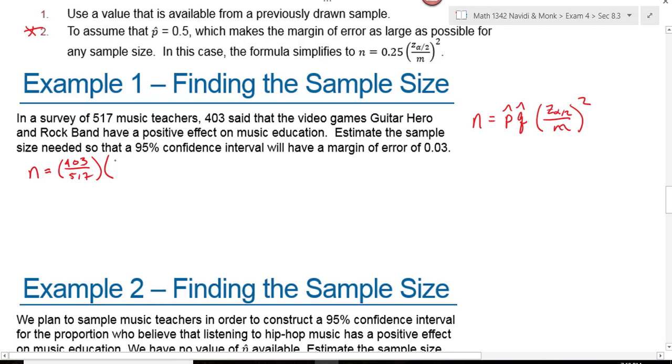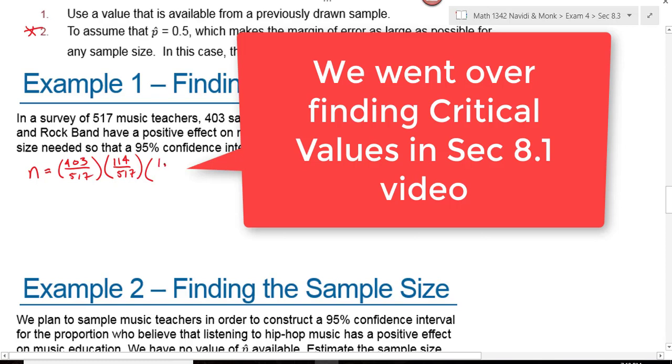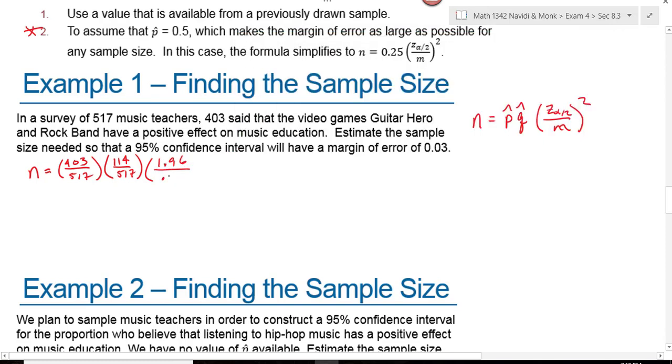If I have 403 successes, I have 114 failures. Subtract that 403 from 517. And then my critical value for a 95% confidence interval is 1.96. My margin of error we were told is 0.03 and I square that.